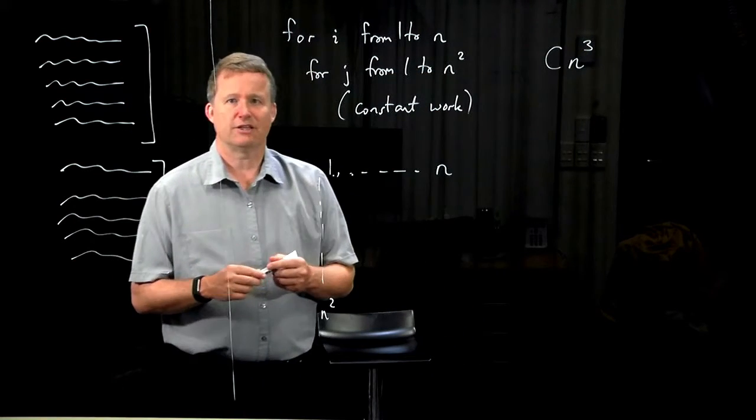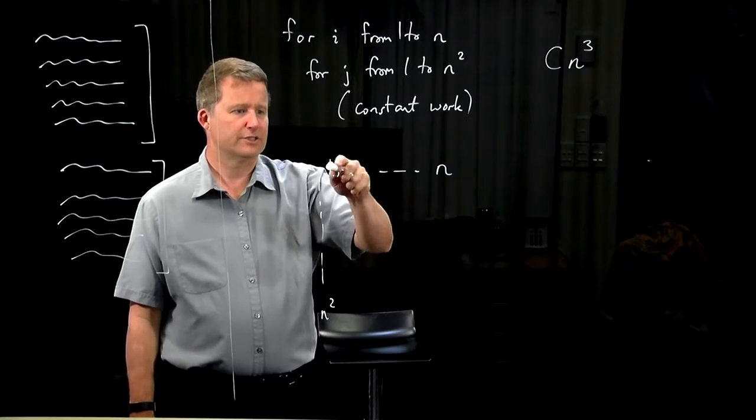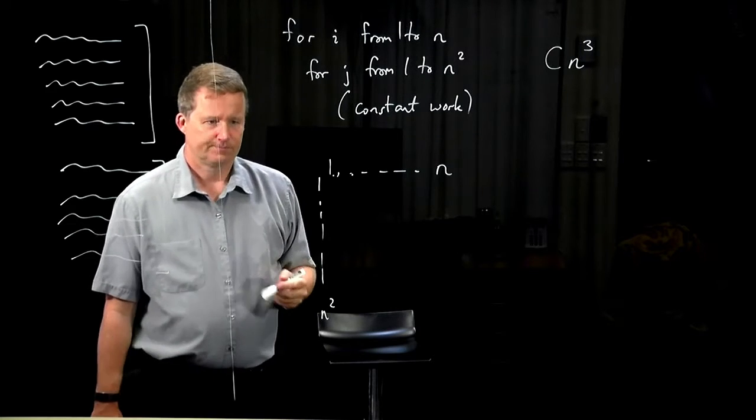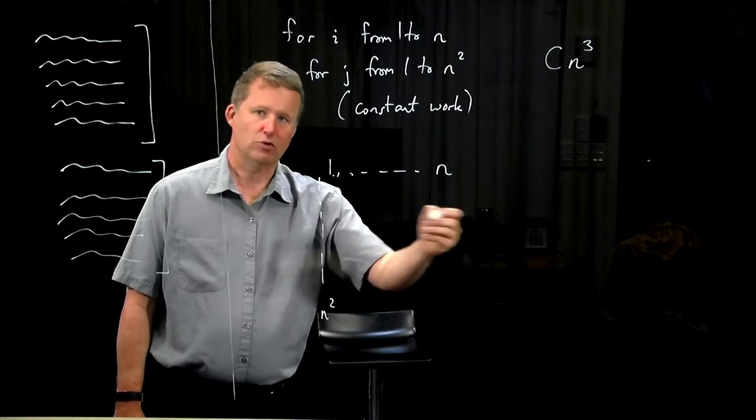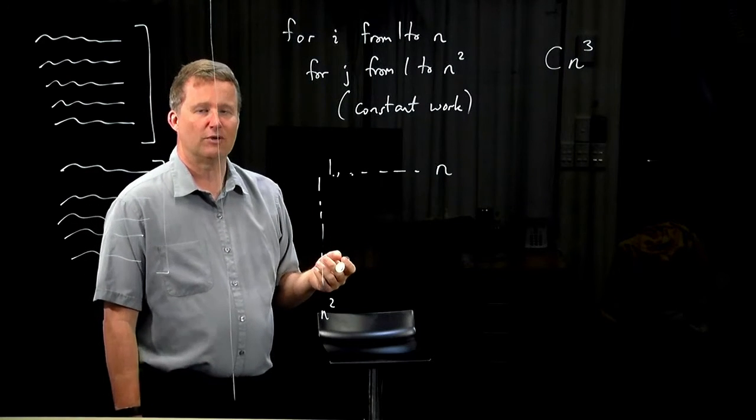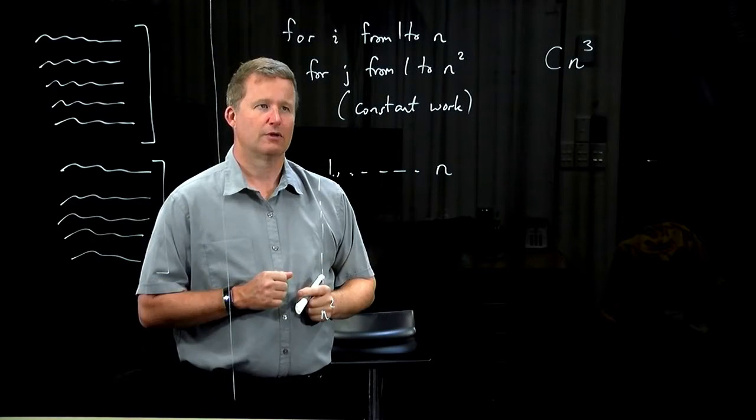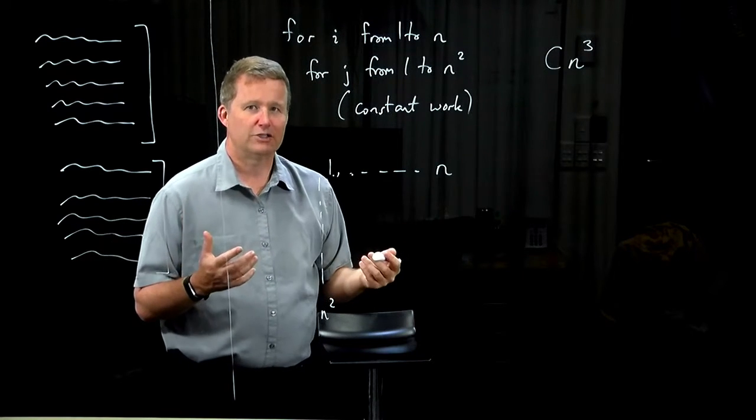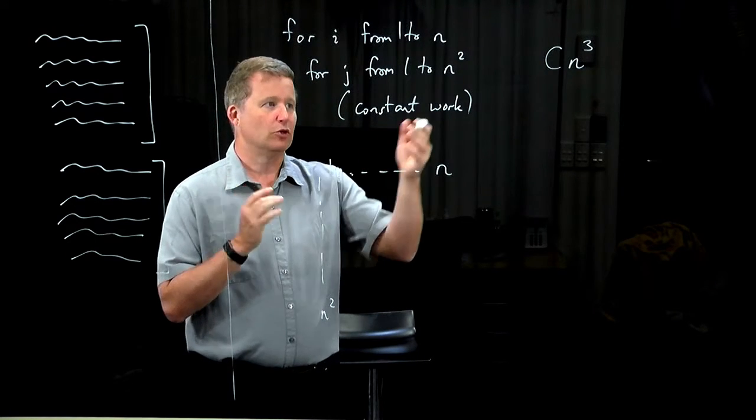The key point here is that the loop variables i and j do not interact. i does its thing, j does its thing. We could, in fact, reverse the order of those loops, run through every possible value of j, and for each j run through all i, and the same thing would happen. So this is the simplest case where you have nested loops. The loops are nested, but they're essentially independent. So the big picture here is that for independent nested loops, the running times multiply. They don't multiply exactly, but up to a constant.